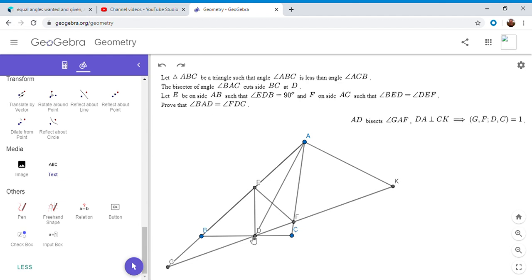Why is this true? There's a well-known theorem that says if AD is the angle bisector of FAG, then if I take a perpendicular to AD through A and let it meet line FG at K, then G, F, D, and K have to be in harmonic conjugation.